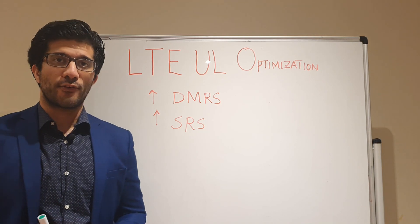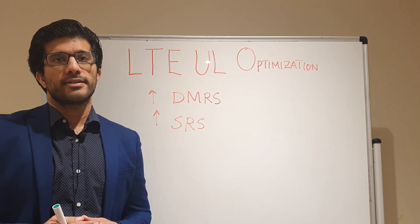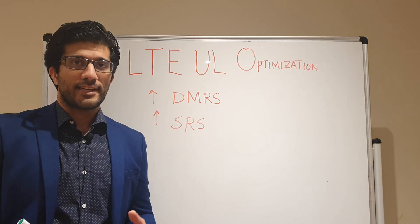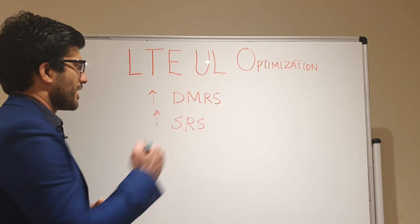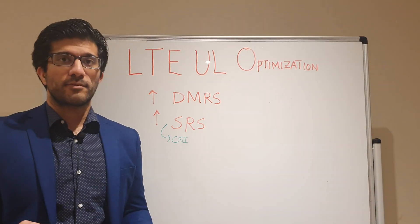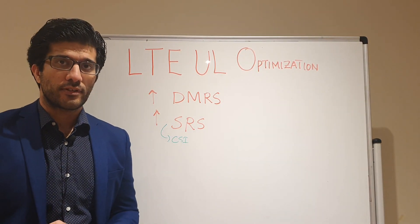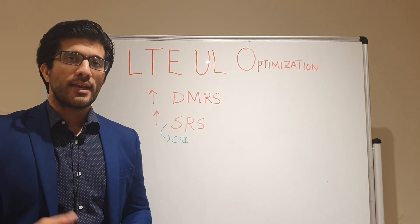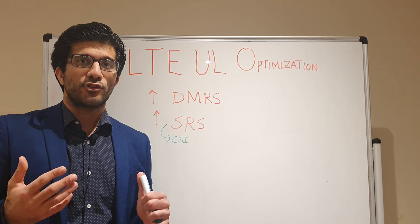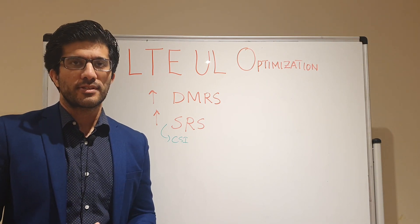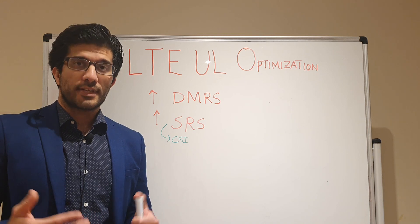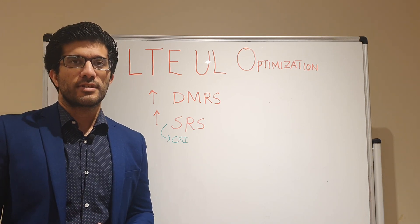The SRS — Sounding Reference Signal — is sent by the UE and is basically used for channel estimation. The SRS provides CSI — Channel State Information — that the eNodeB estimates and then uses for scheduling purposes in terms of frequency allocation.